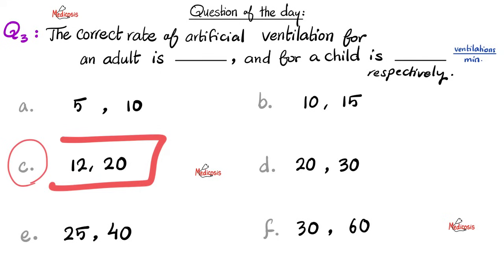Why is this? The normal respiratory rate in an adult is about 12 to 16 or 12 to 18, so staying on the lower end gives us 12. The normal respiratory rate in a healthy child depends on age but is usually higher than in adults — around 20 to 26 — so on the lower end, that's 20. The correct answer is C. You're trying to mimic the normal respiratory rate and stay on the low end; you do not want to hyperventilate your patient.